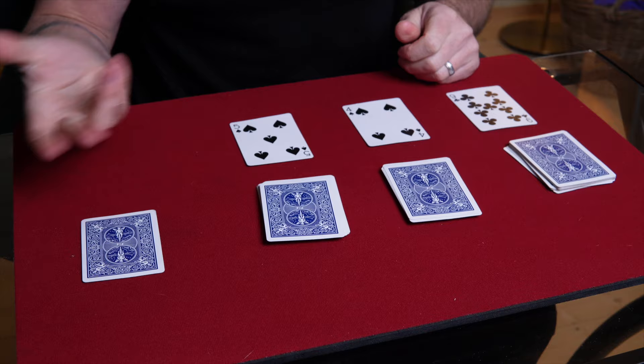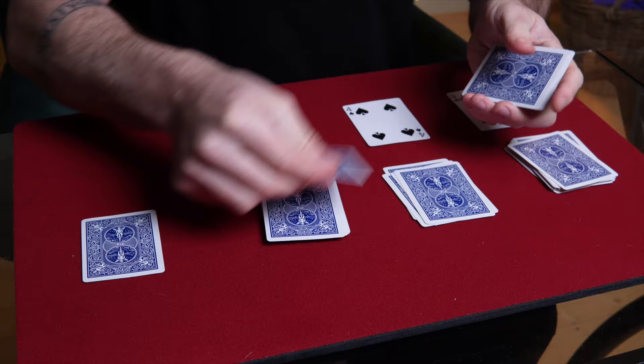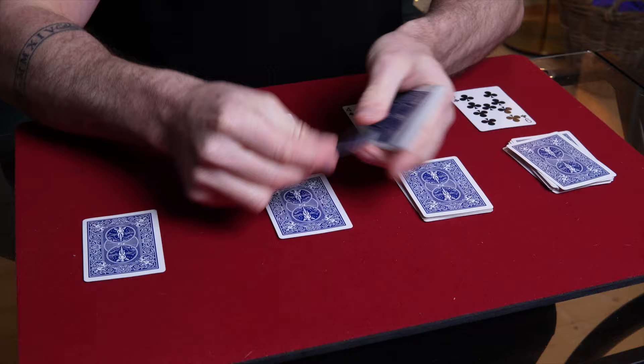Then this is a four. So we're going to count four. That's one, two, three, four. One on either packet and drop these on top. Finally, this is a five. One, two, three, four, five. One card in either packet and drop these on top.